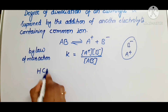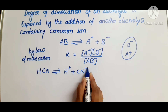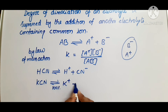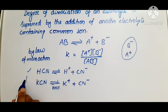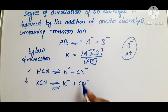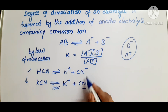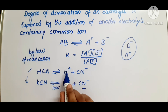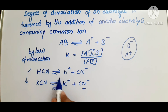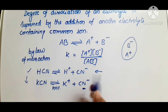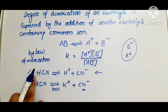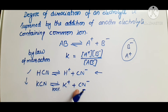For example, suppose you have HCN — it will dissociate into H⁺ and CN⁻. If you now add KCN, which is a strong electrolyte, it gives 100% K⁺ and CN⁻ ions. CN⁻ is the common ion. The increased CN⁻ concentration causes the equilibrium to shift backward, suppressing the dissociation of HCN. So the degree of dissociation of the weak electrolyte is decreased by the addition of the strong electrolyte containing the common ion.